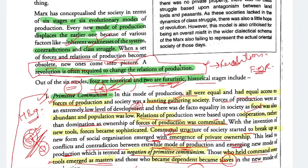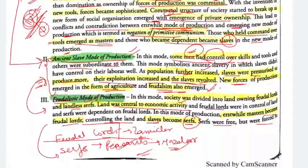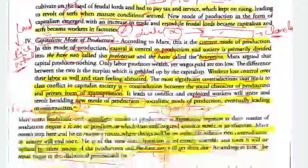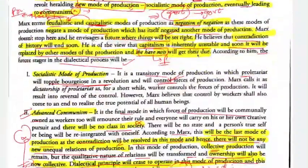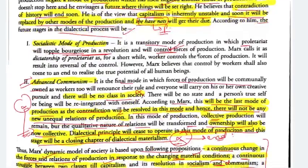Revolution is often required to change the relations of production. The mass-scale revolt will happen in capitalism because contradictions there are at peak optimum level. After that revolt, we move to the new mode of production.